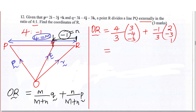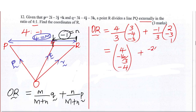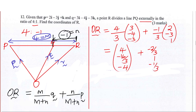After doing that, you multiply: 4 over 3 times 3 gives 4; 4 over 3 times negative 4 gives negative 16 over 3; 4 over 3 times negative 3 gives negative 4. Then plus: negative 1 over 3 times 2 gives negative 2 over 3; negative 1 over 3 times negative 3 gives 1; negative 1 over 3 times 1 gives negative 1 over 3.